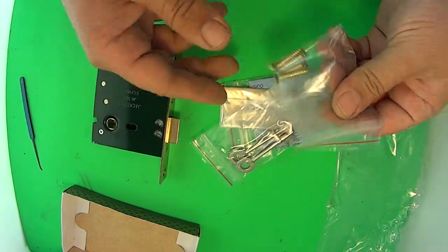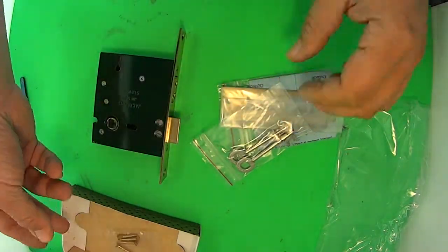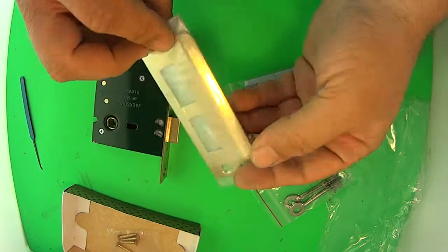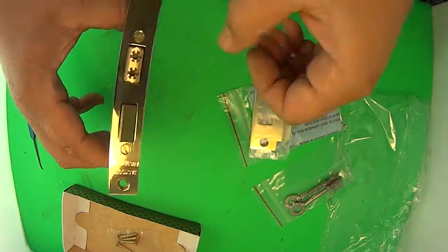The handles are not included. It comes with four screws, two for the striker plate which is here, and two for the face plate of the lock.